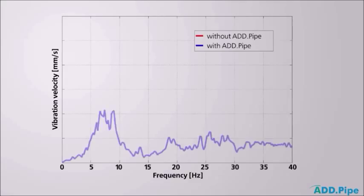A comparison of the vibration amplitudes of piping systems with and without ADD pipe shows that resonance peaks are eliminated, and that in a wide frequency range vibrations are reduced to a large extent.